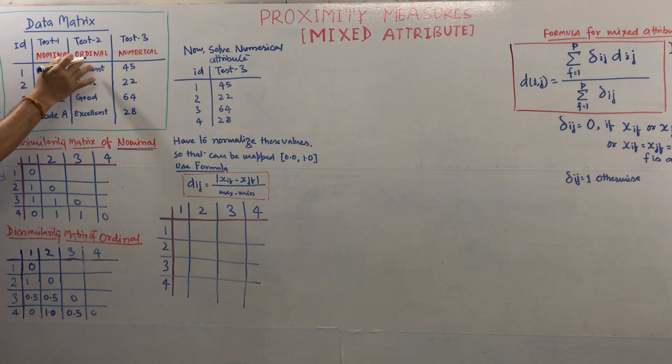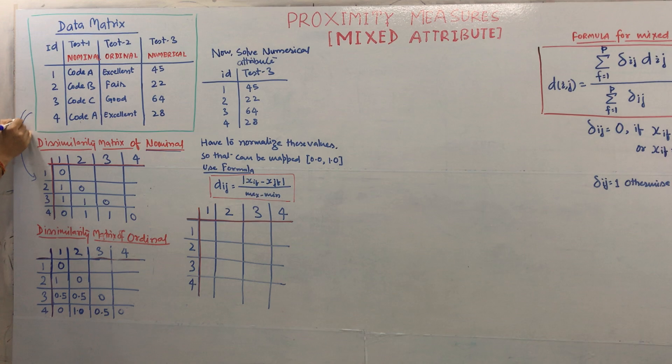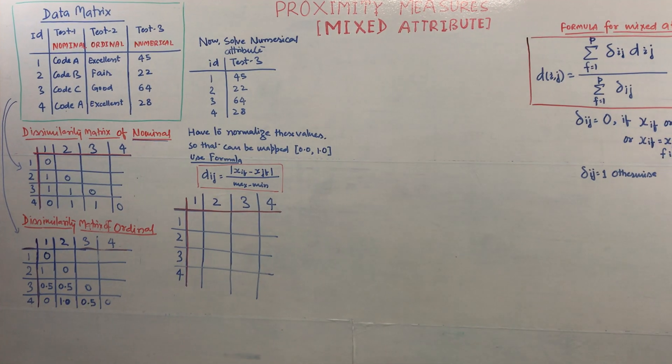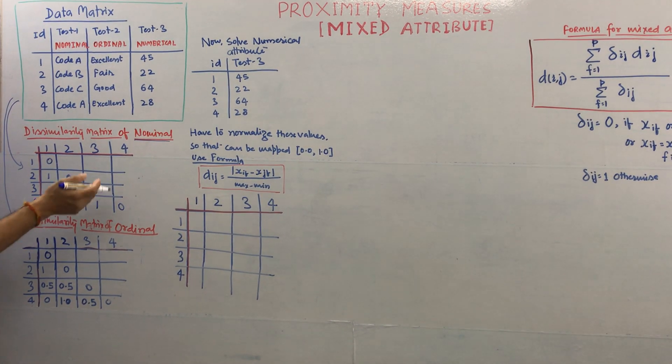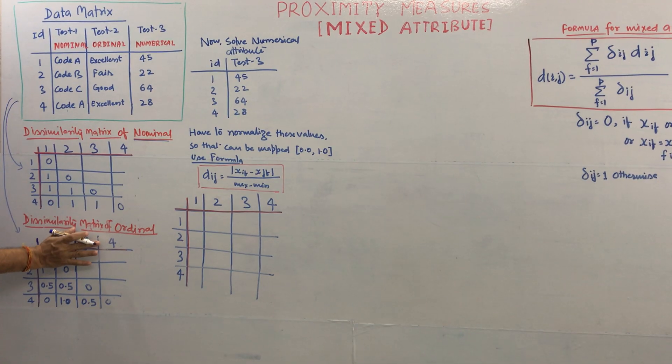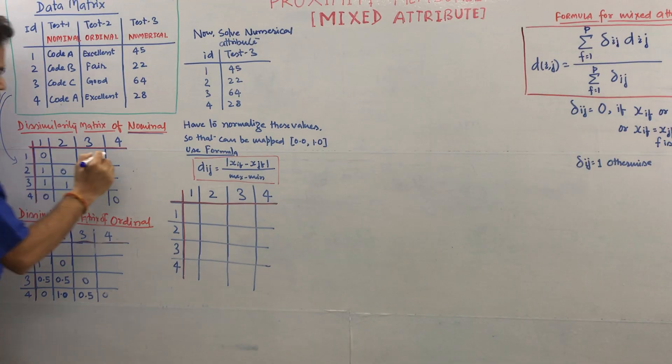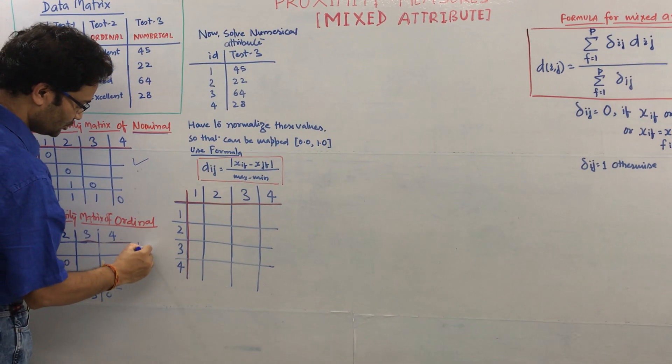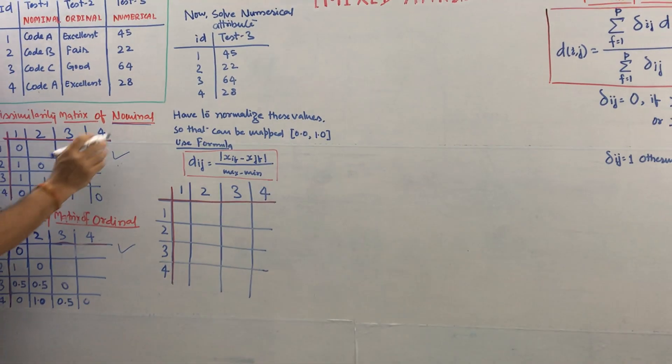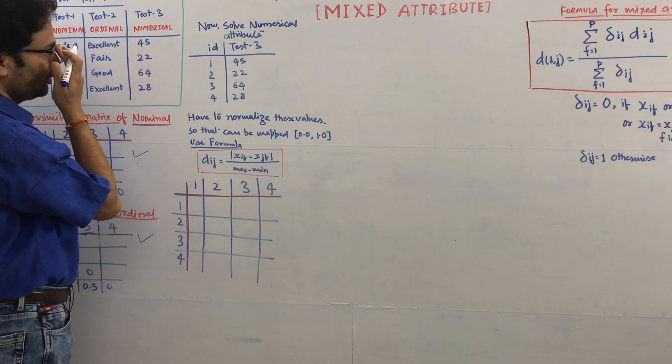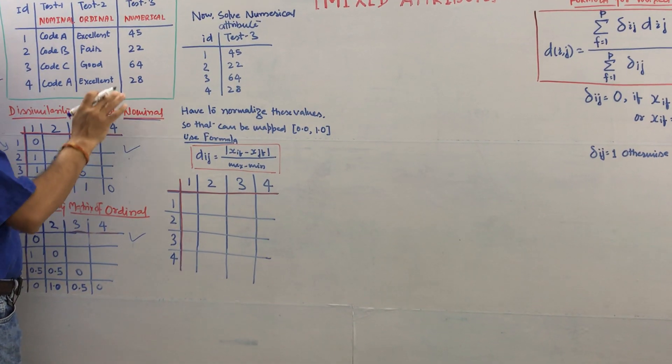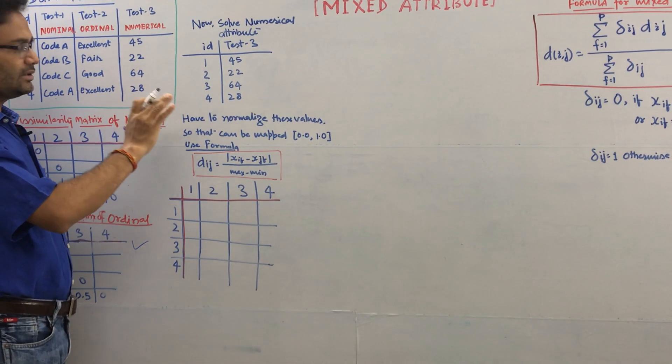Then for the ordinal also you find out this table with the help of my previous video. When you solve the ordinal dissimilarity, only assume this data. I assume we have already done these two parts. Now we start for the numerical data. How to solve the numerical in the context of mixed attribute?